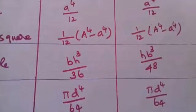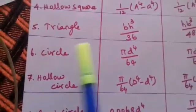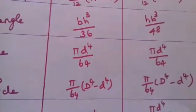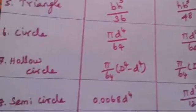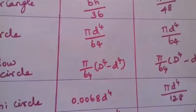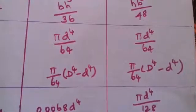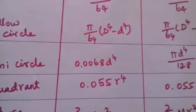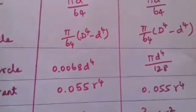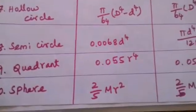Then circle: that is π d power 4 by 64. For Iyy, π d power 4 by 64, both are same. Hollow circle: π by 64 into capital D power 4 minus small d power 4. Iyy: π by 64, capital D power 4 minus small d power 4. Semicircle: 0.0068 d power 4, that is π d power 4 by 128.